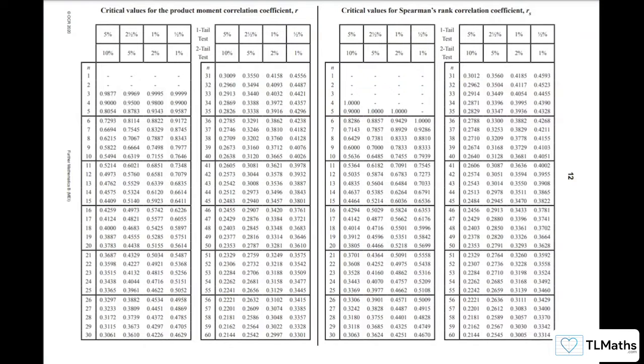At the top, you've got this option of one-tail test and two-tail test, and you've got the significance levels here. Two-tail: 1%, 2%, 5%, 10%, and one-tail test: 0.5%, 1%, 2.5%, 5%. So, if it is a one-tail test at the 5% significance level, then you're going to look down at this column here.